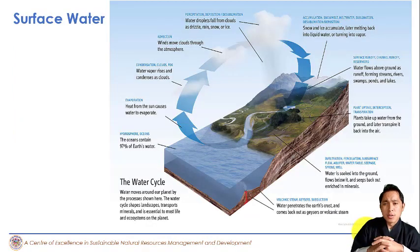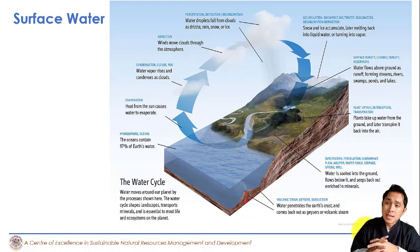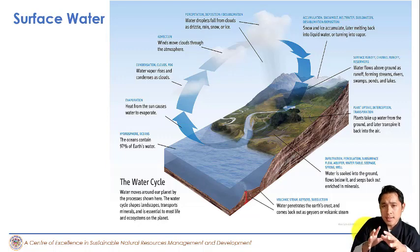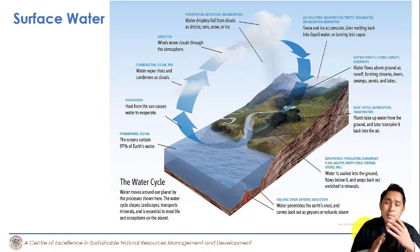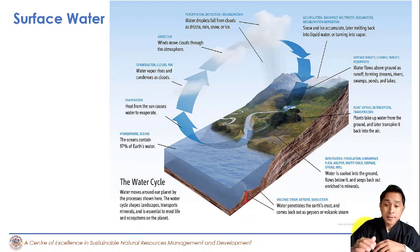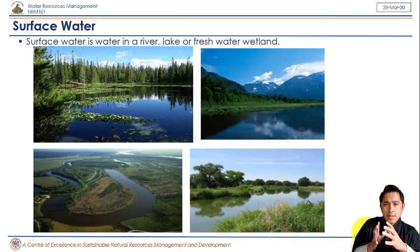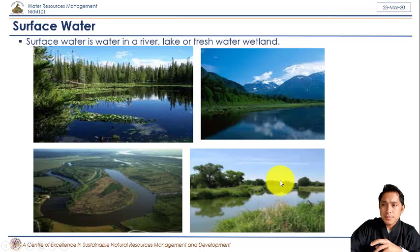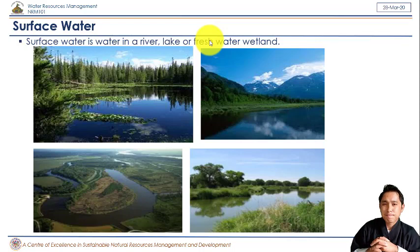The hydrologic cycle explains what surface water is. Surface water includes runoffs like rivers, streams, lakes, ponds, and oceans — water that has not infiltrated into the soil surface or remained as groundwater, but stays on the surface. The basic definition of surface water is water in a river, lake, fresh water, or wetland.